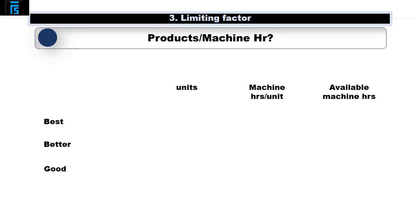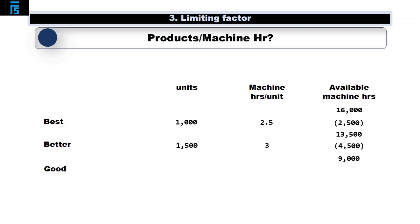Having worked out which order we should make our products, we now need to calculate how many of each we can make with the available machine hours. Starting with Bests, each Best takes 2.5 machine hours and total demand is 1,000 units, so we utilise 2,500 hours, leaving 13,500 hours for Betters and Goods. The 1,500 Betters each taking 3 hours utilise a further 4,500 hours, leaving 9,000 hours to make Goods. As each Good takes 4 hours to make, we can make 2,250 units — but the demand was 2,500 units, so we cannot make 250 units given the restricted machine hours.